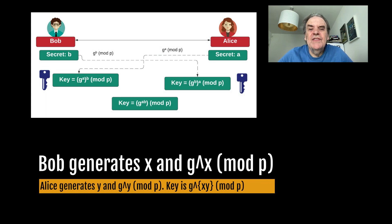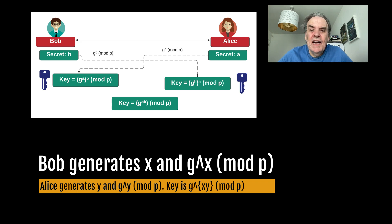With the Diffie-Hellman method, Bob creates x and shares g to the power of x mod p, and Alice creates y and shares g to the power of y mod p. The g is the generator and p is a large prime number. The shared key that they have in the end is g to the power of x·y mod p.